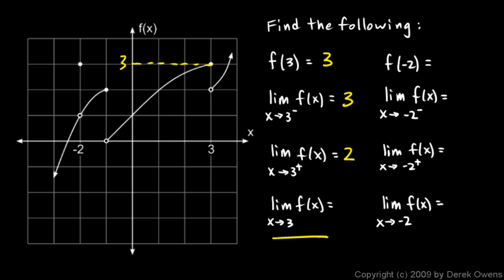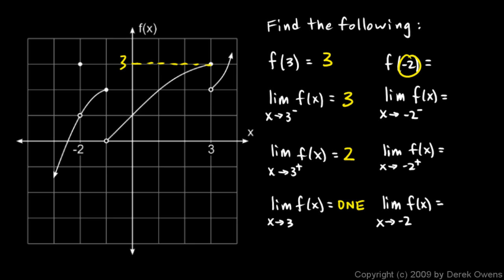The limit as x approaches 3 does not exist. If the left-side limit and the right-side limit are different, then the overall limit does not exist.